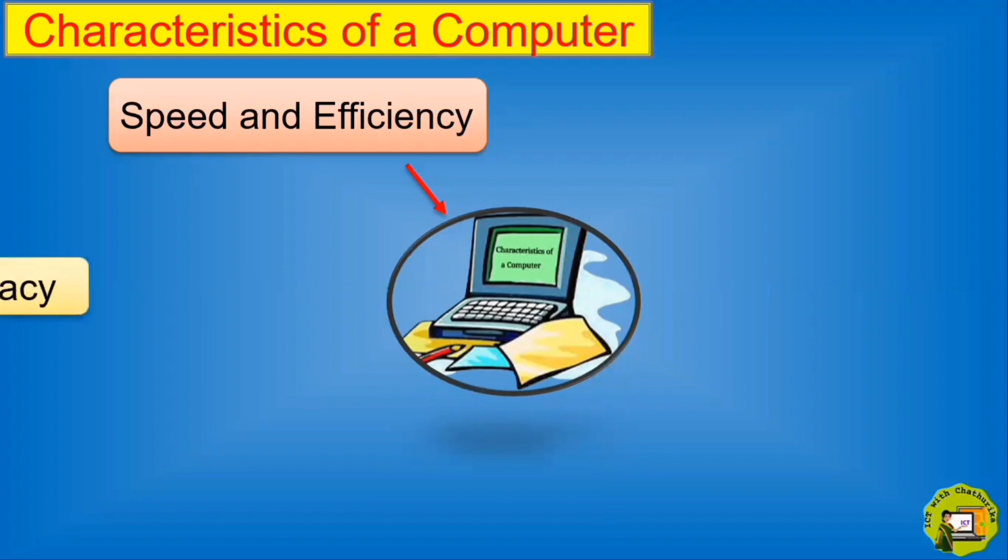Second one is accuracy. Computer gives us correct information and it never gives wrong information unless user does. Who is this user? User means the person who works with the computer. For an example, when we're working with the computer, the user means us. If we enter wrong instructions to the computer, it will give us wrong information.